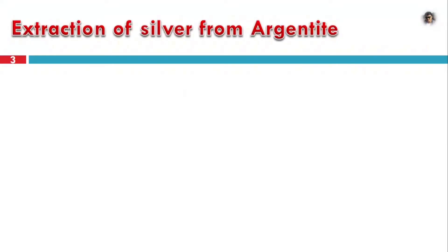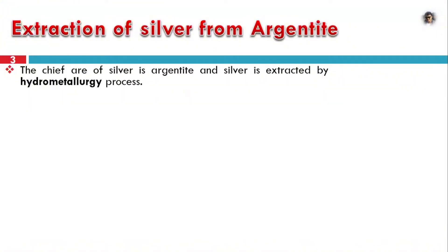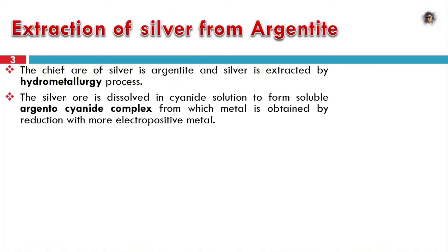The extraction from Argentite (Ag2S) uses the hydrometallurgical process. We use chemicals to extract silver from argentite. Argentite dissolves in a cyanide solution. More electropositive metals will displace silver. We will use chemical methods to extract silver.